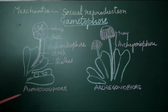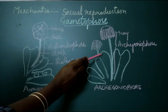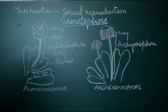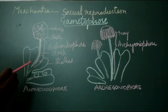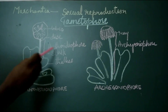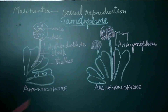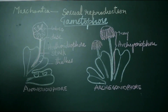They develop from the growing points of the thallus. From the growing points of the thallus, usually at the end of the vegetative growth, these gametophores develop. In the process of formation of the gametophore, whether antheridiophore or archegoniophore, the growing region is completely utilized and so the vegetative growth ceases completely.